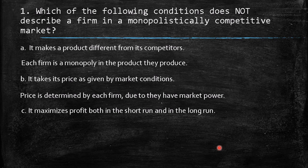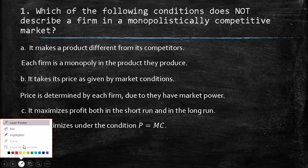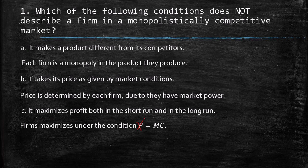Option C says it maximizes profit both in the short run and the long run. That's correct — whether in a perfectly competitive market, a monopoly, or monopolistic competition, all firms are profit maximizers. The maximization condition for all market structures is marginal revenue equal to marginal cost.